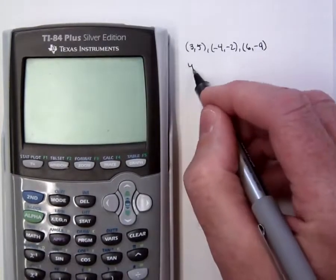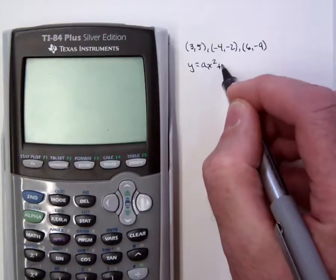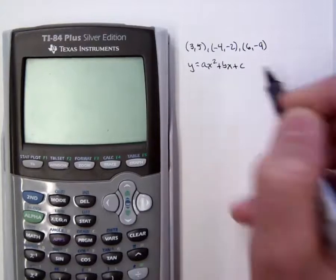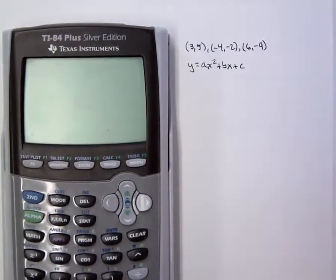And we, of course, want a model of the form y equals ax squared plus bx plus c. And our first step is going to be to insert the coordinates of the three points into the form of the model.